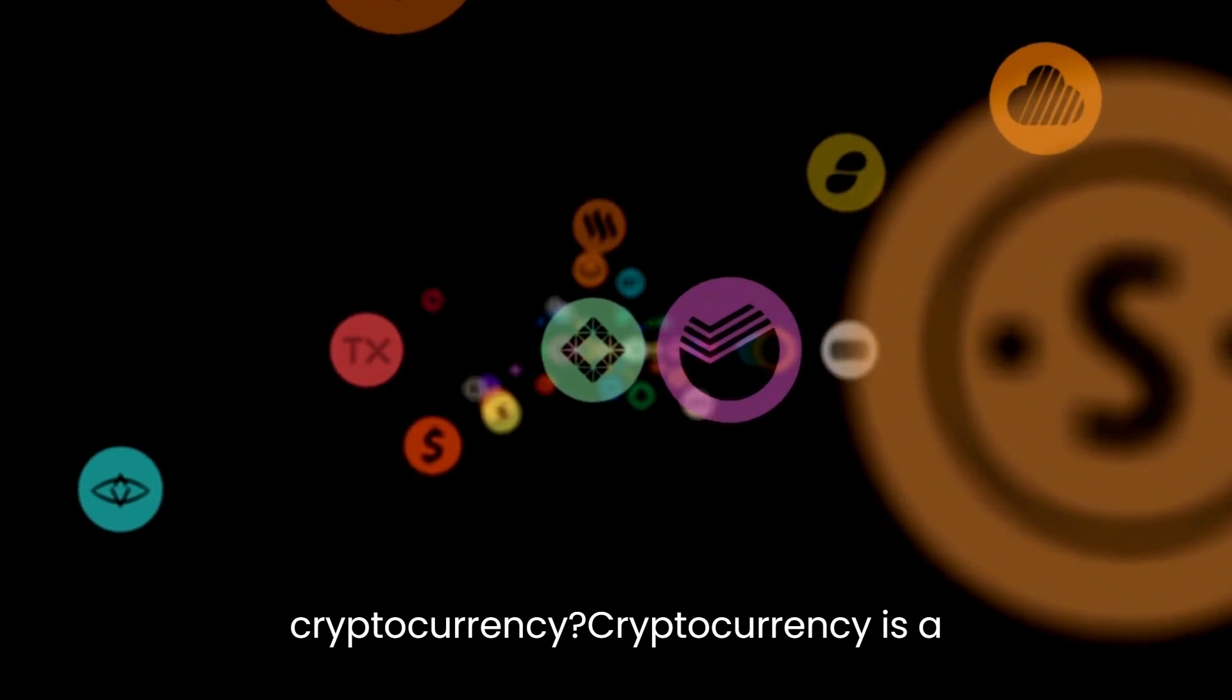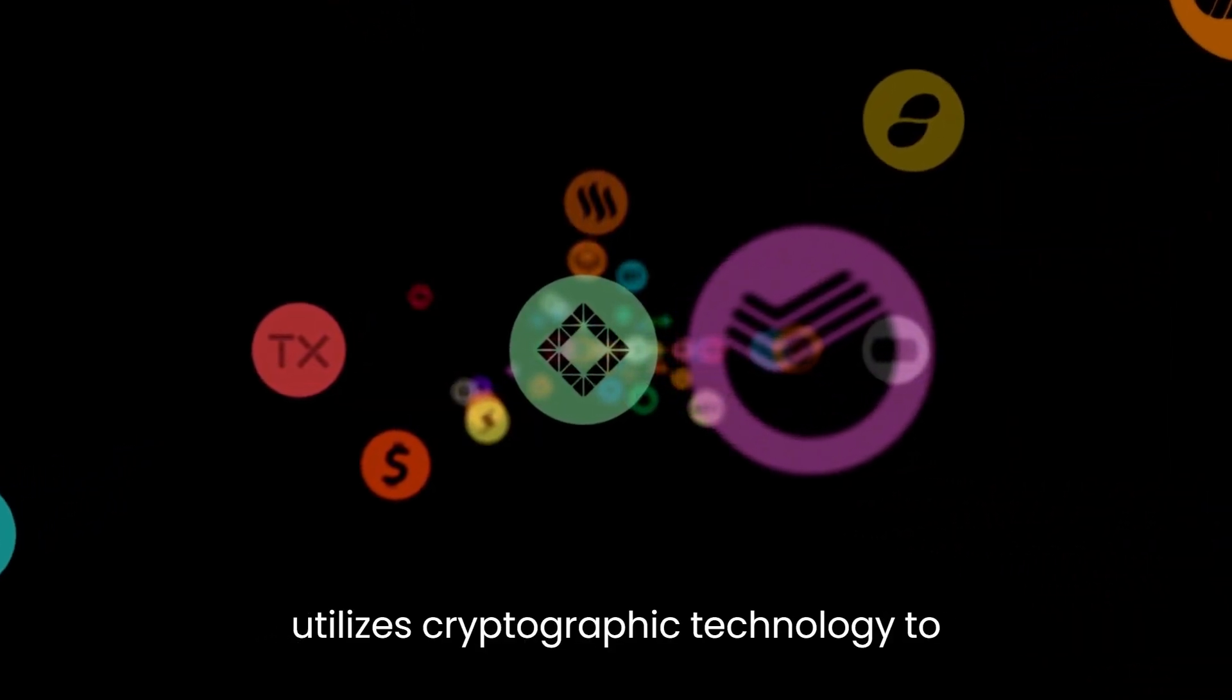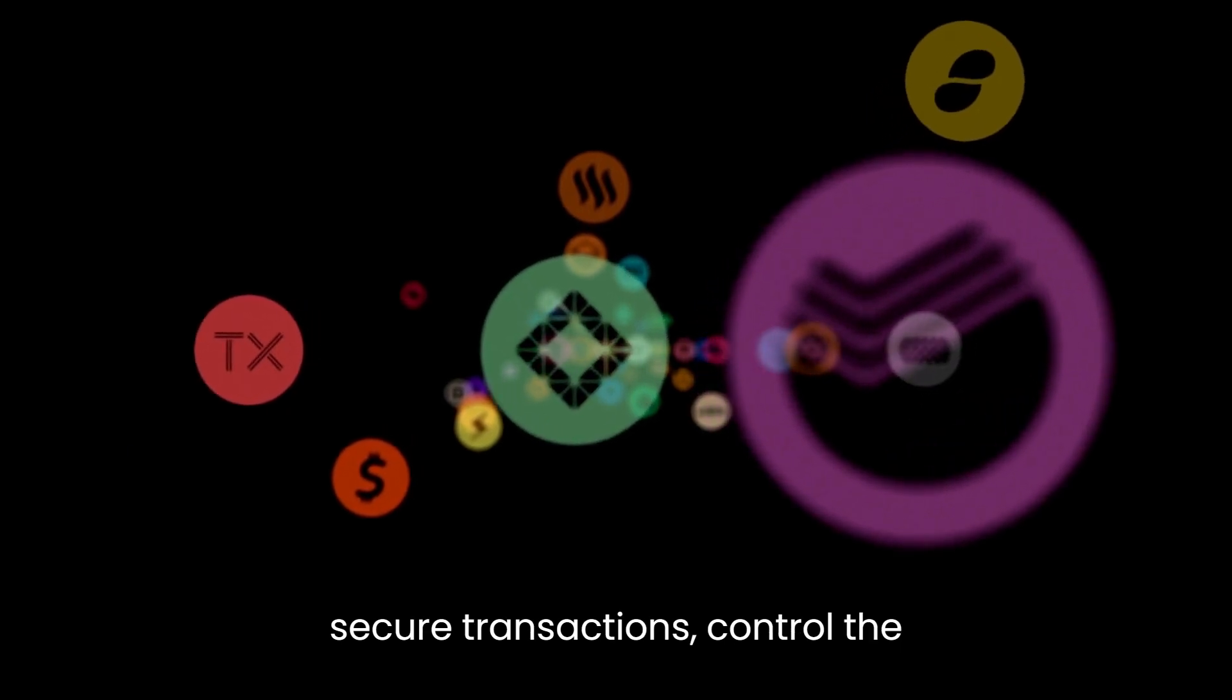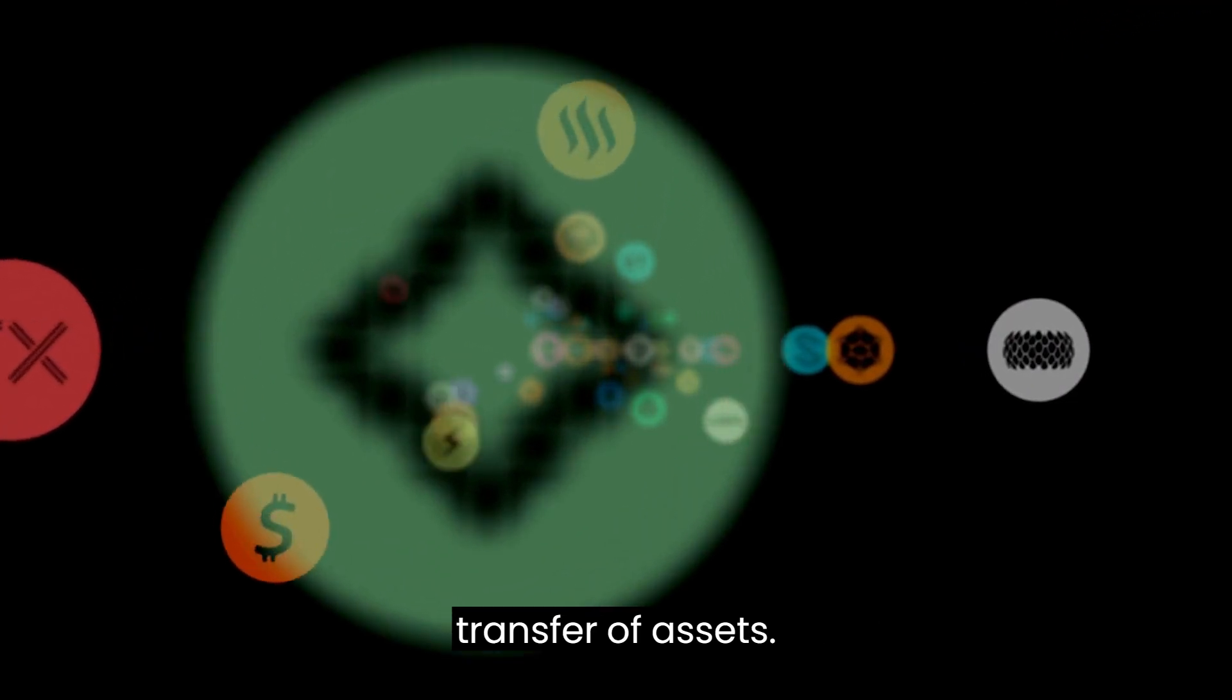What is Cryptocurrency? Cryptocurrency is a digital or virtual form of currency that utilizes cryptographic technology to secure transactions, control the creation of new units, and verify the transfer of assets.